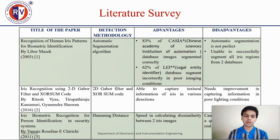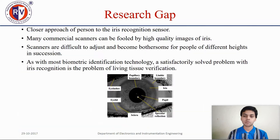This has been successfully addressed by iris recognition using 2D Gabor filter and Zorsum code, which is able to capture textural information of the iris in various directions. Also, iris biometric recognition for person identification in security at a distance is able to successfully and speedily calculate dissimilarity between two iris images.